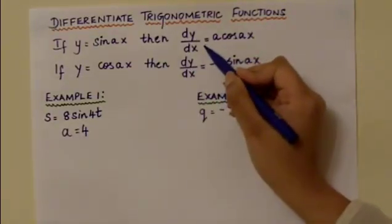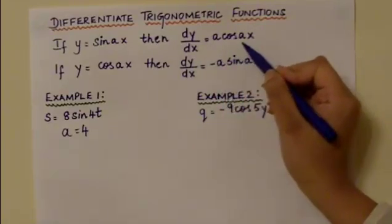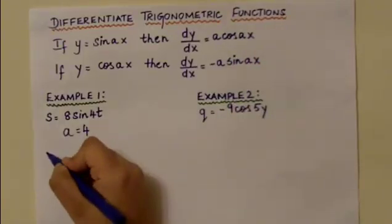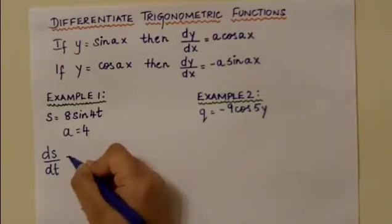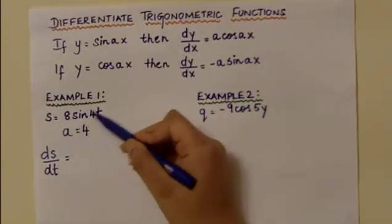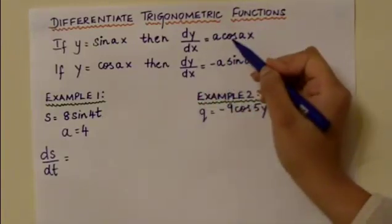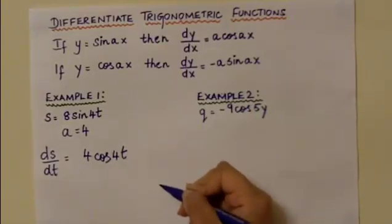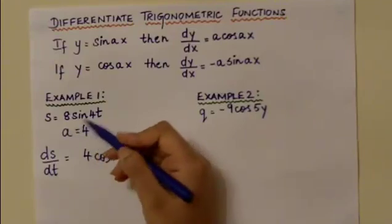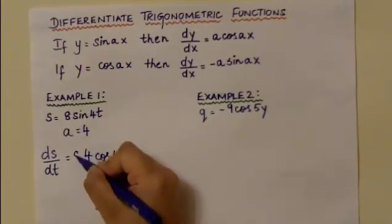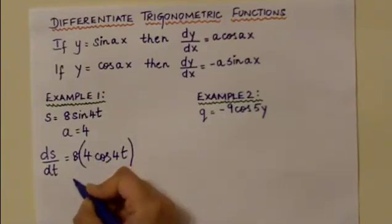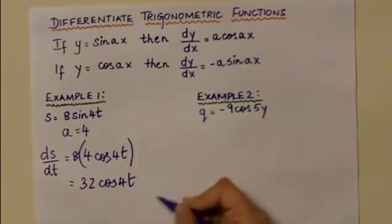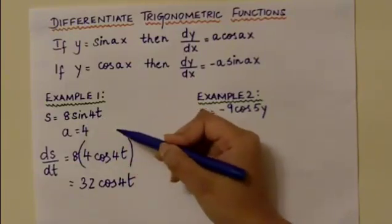Substituting into the formula, dy over dx equals a cos ax, where a equals 4. Therefore, ds over dt equals 4 cos 4t. Because the whole term is multiplied by 8, we multiply the answer by 8. So 8 times 4 gives 32 cos 4t, which is the differentiation of s equals 8 sin 4t.